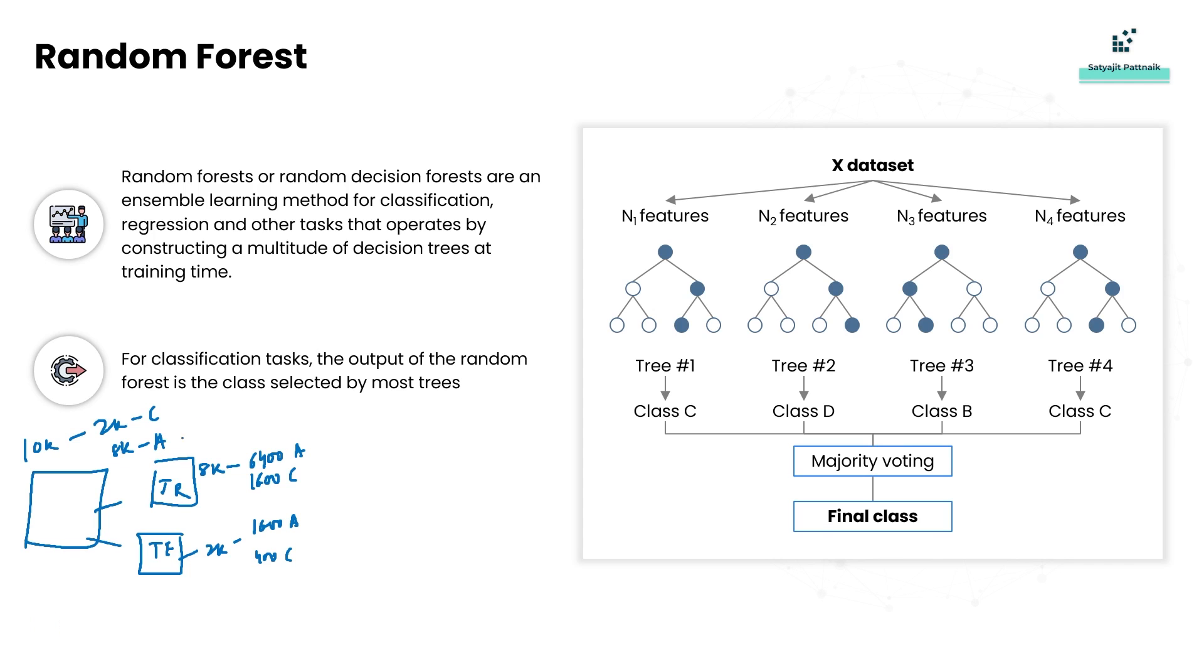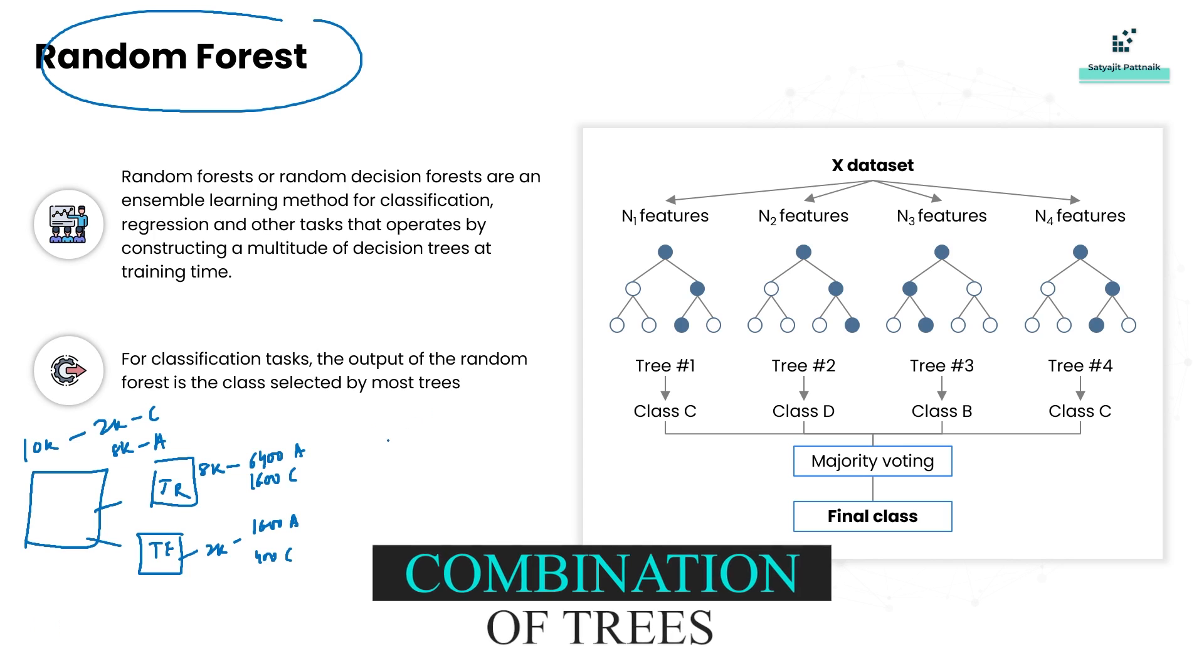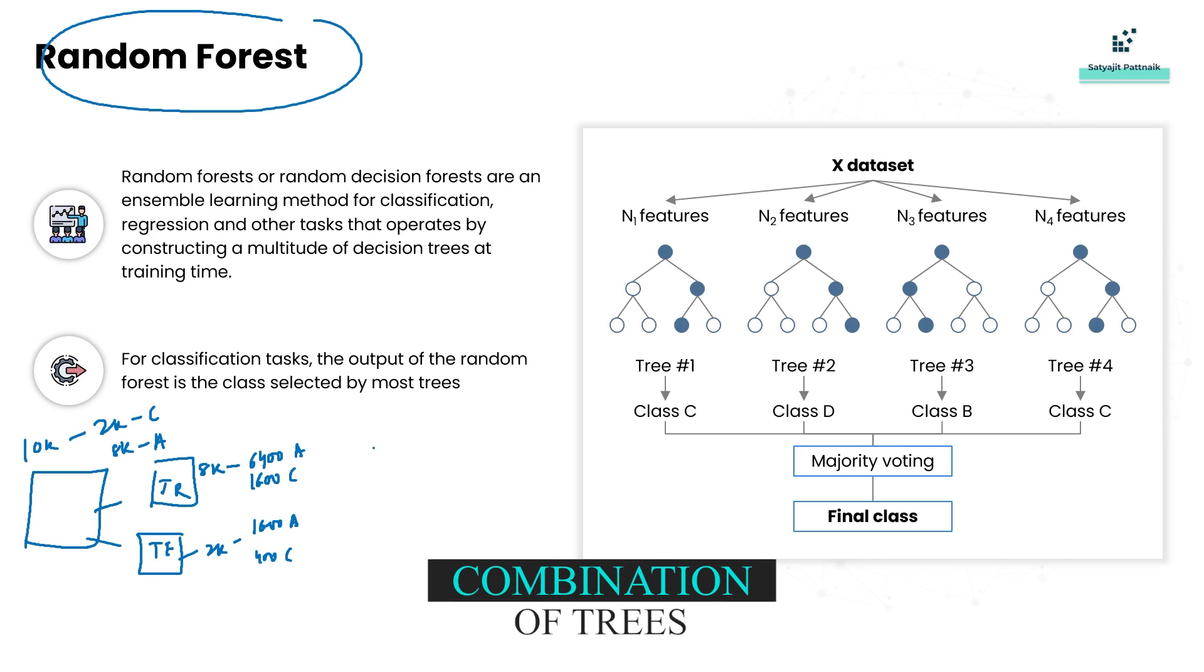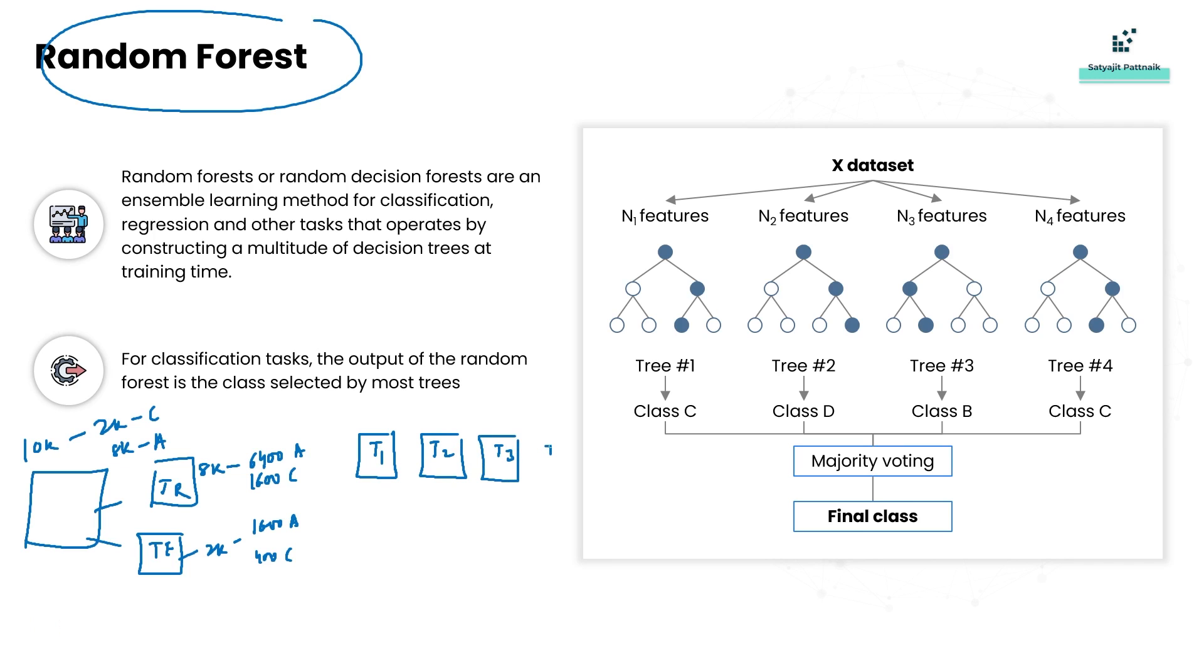Now random forest, as we know, is nothing but a combination of trees. So what happens is it creates multiple trees: tree 1, tree 2, tree 3, tree 4, dot dot dot, tree n. So multiple trees are created.